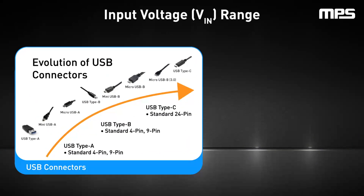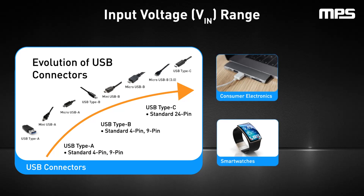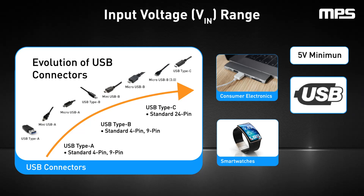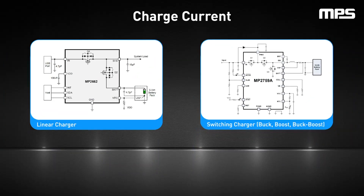The input voltage range is a critical factor influenced heavily by USB standards. Most consumer electronics are powered from USB ports, which must support 5 volts at minimum. As the USB standard has evolved to the new USB Type-C connector supporting USB Power Delivery, also called USB PD, the maximum allowed voltage has increased up to 20 volts. This value can increase to 48 volts with USB PD extended power range specifications. For devices needing less than 15 watts, a standard USB Type-C port is sufficient. If the total power needed exceeds 15 watts, then a solution with a higher input voltage and USB PD must be employed when using a USB connector.